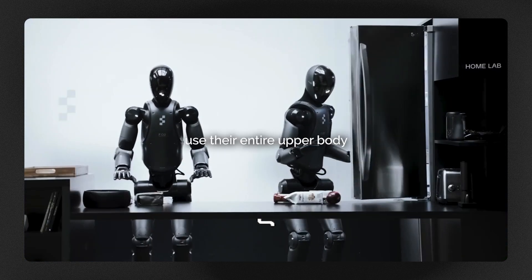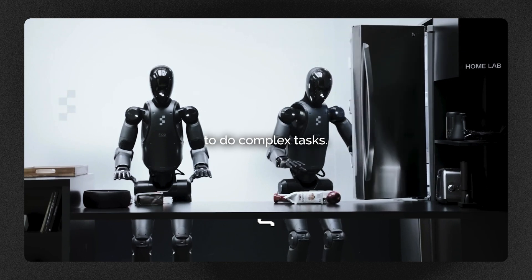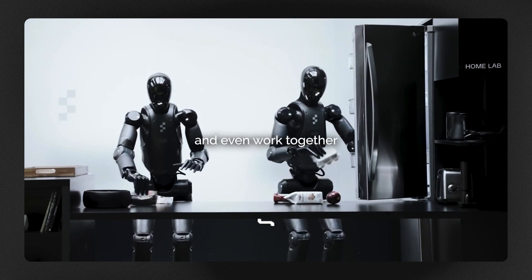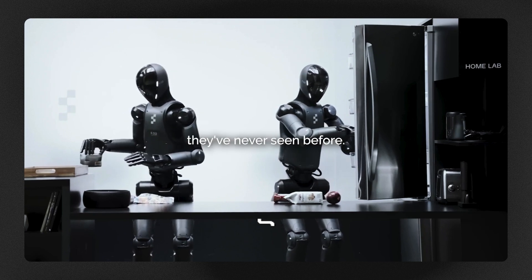Helix lets robots use their entire upper body to do complex tasks. They can pick up delicate items, open drawers, and even work together to put away groceries they've never seen before.